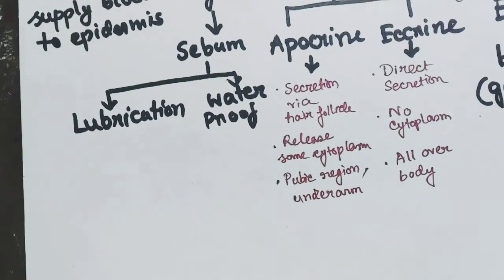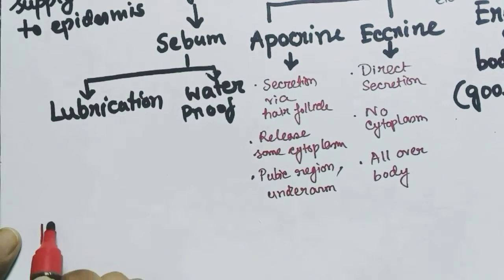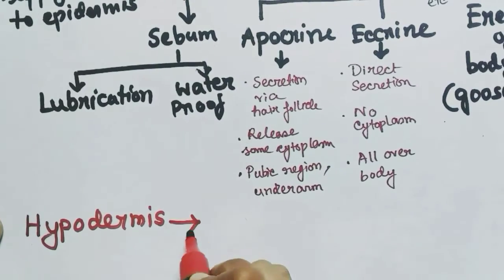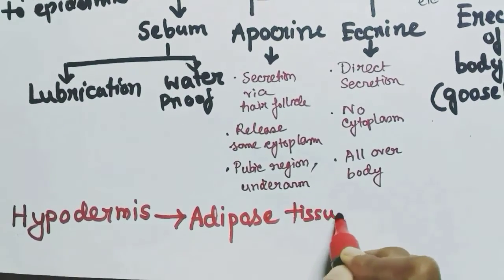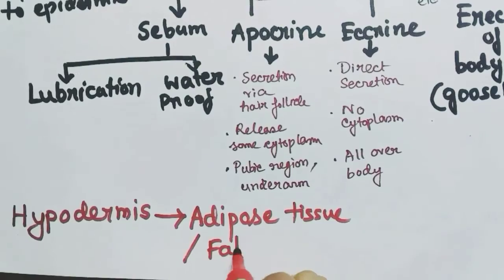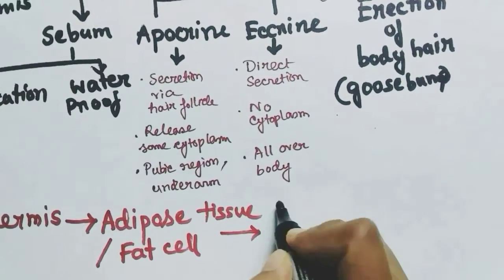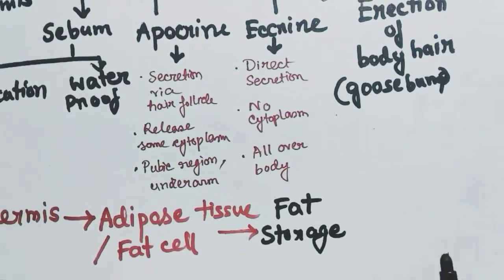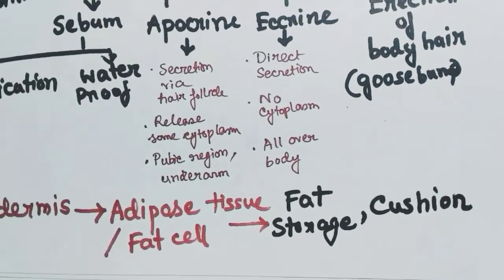Below the dermis layer is the hypodermis. The hypodermis contains adipose tissues or fat cells, whose functions are to store fat, cushion our body, and produce heat.